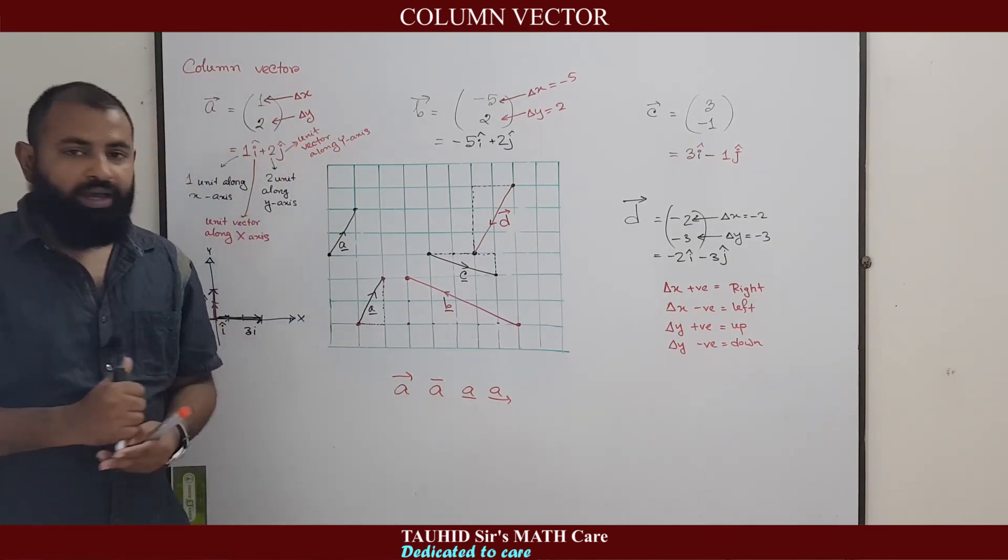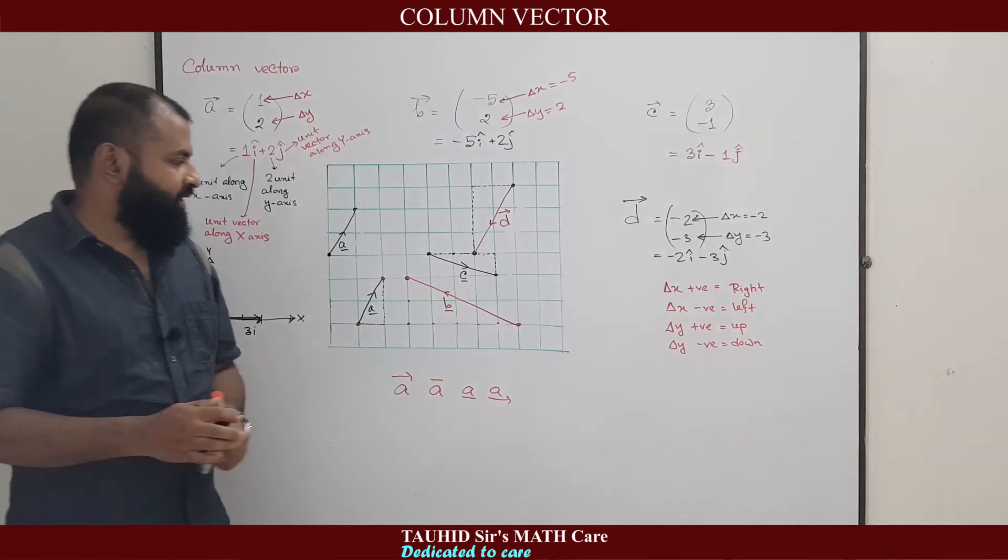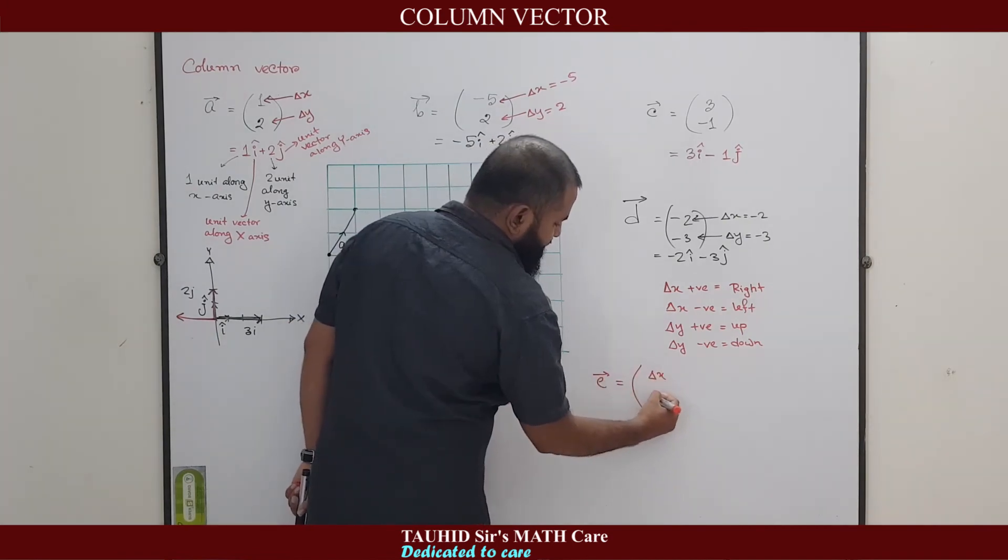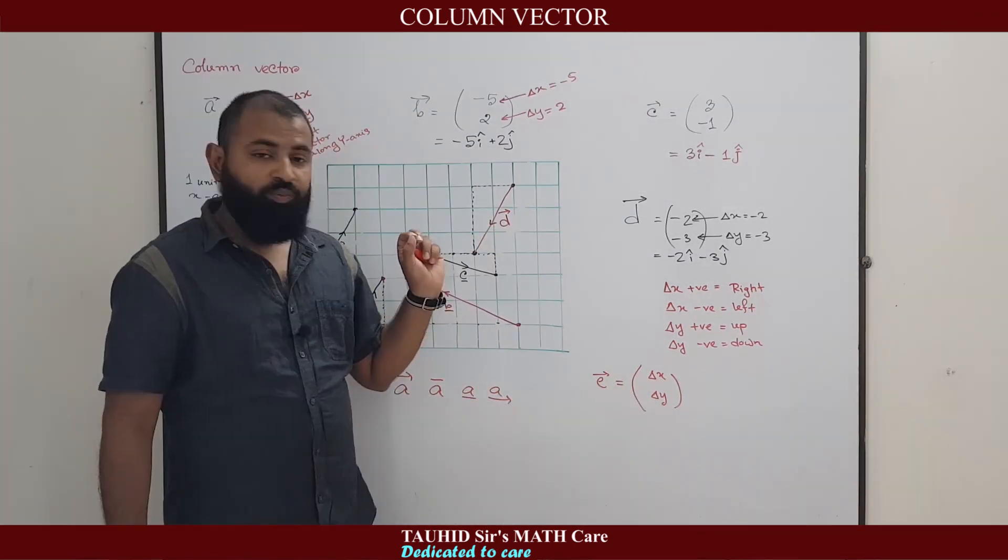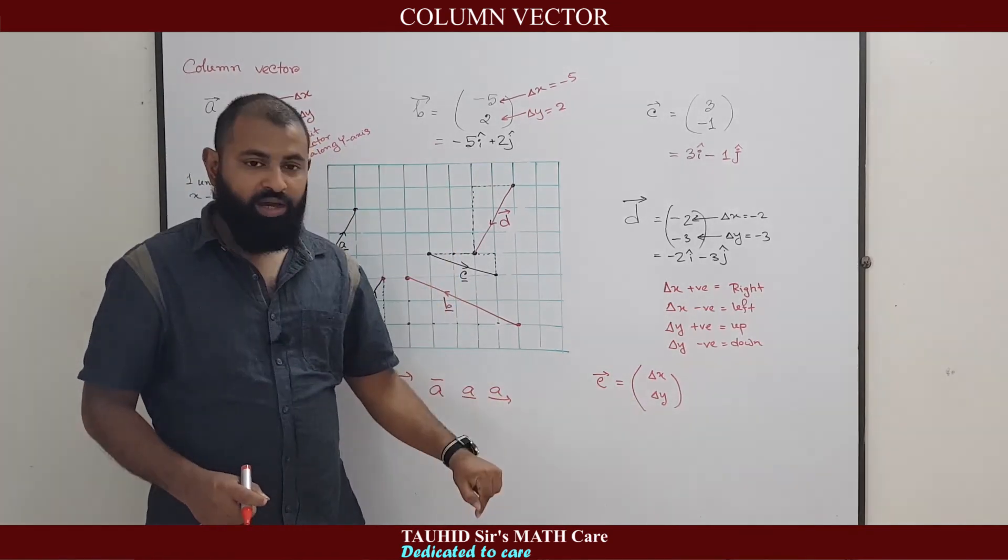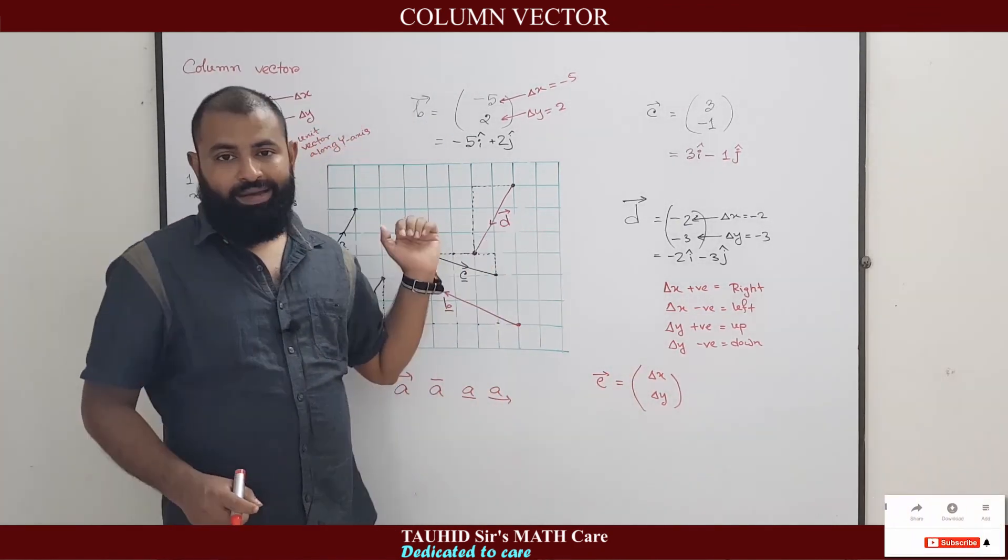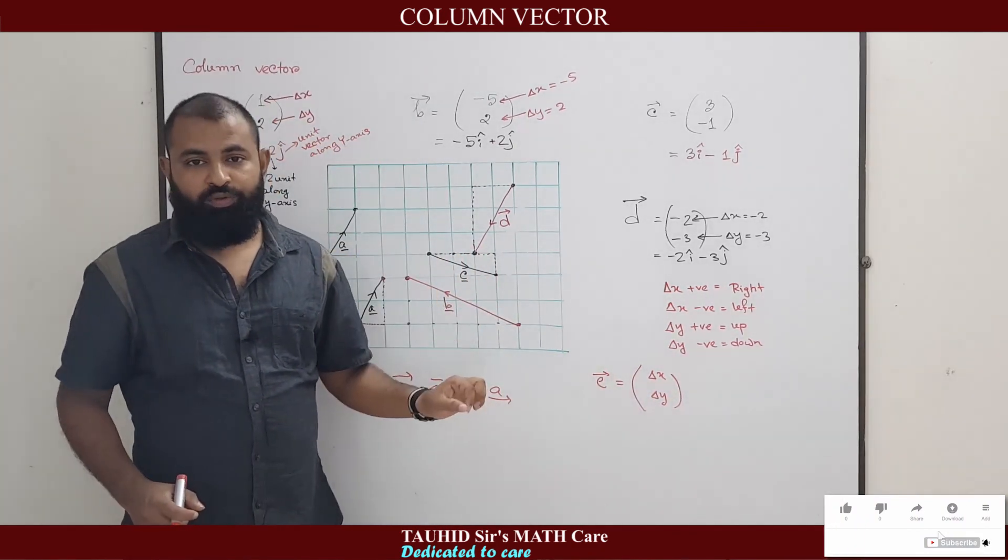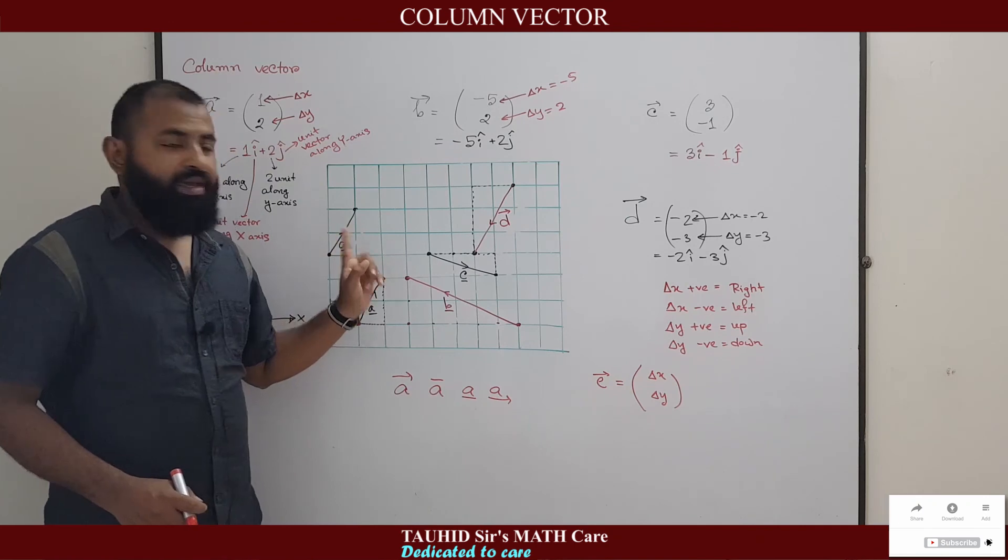So from this video, I'm pretty sure that you have learned about the concept of column vector. I'm repeating again: for any column vector E delta x, delta y, the value above defines how much right or how much left we proceed, and the value delta y defines how much above or how much down we will move. Delta x positive, we will move right. Delta x negative, we will move left. Delta y positive, we will move up. Delta y negative, we will move down. And the process of drawing a vector from its column vector, I have shown you in this graph.